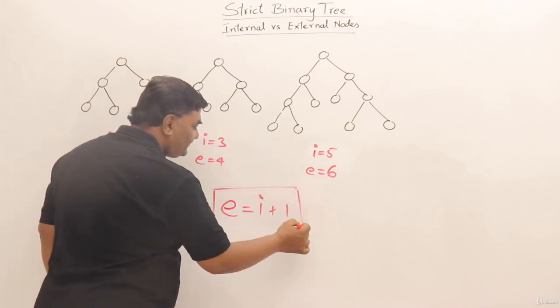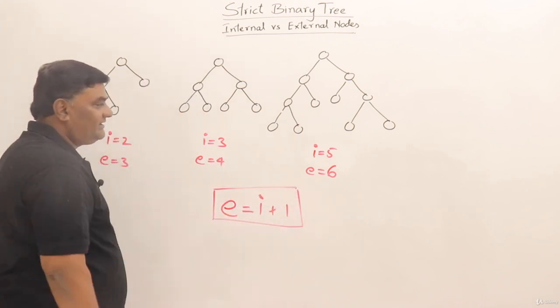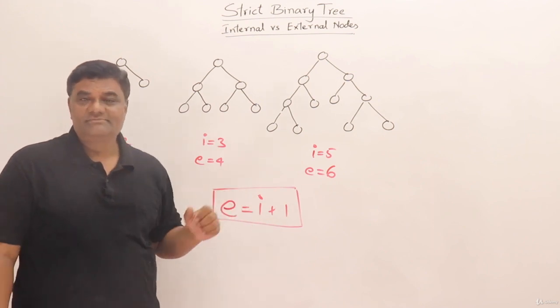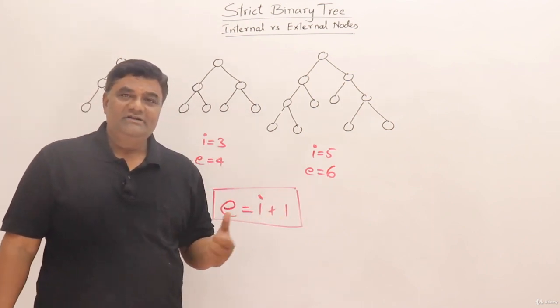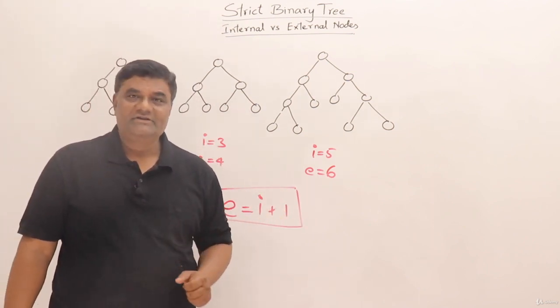Yes, this formula is always true in strict binary trees. And in strict binary trees, this formula is more important: the number of internal nodes plus 1 is equal to the number of external nodes, E is equal to i plus 1.